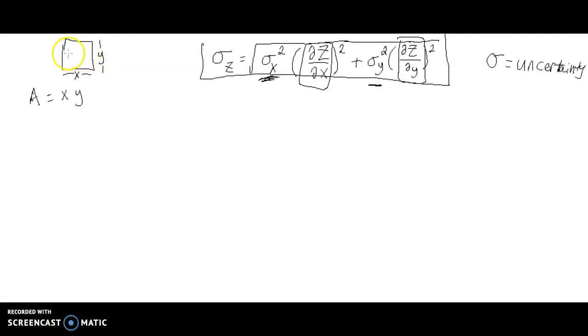And I want to calculate the area, and the area of a box is going to be equal to length times width, or length times height, whatever notation you want to use, but in this case x and y. So my area is going to be given by my x measurement, my length measurement, and y, my height measurement.